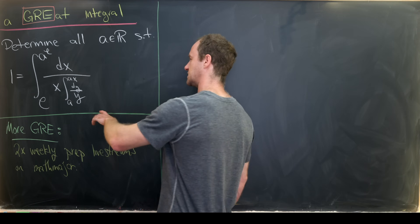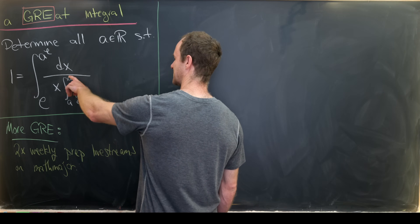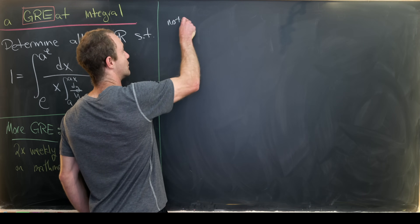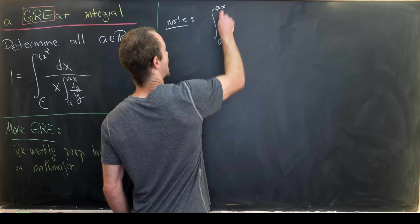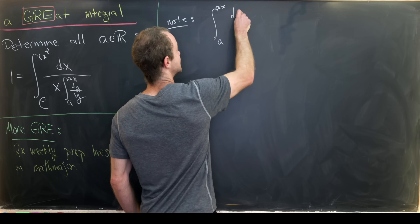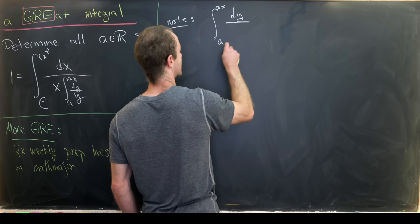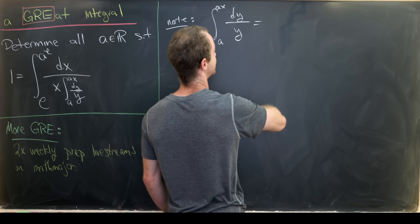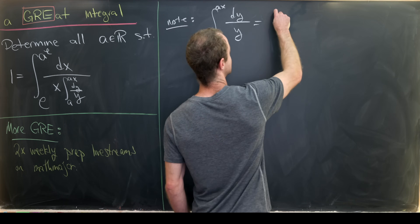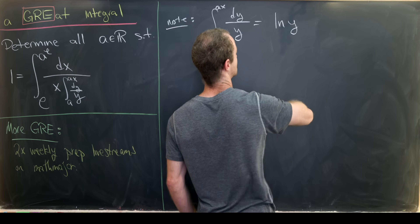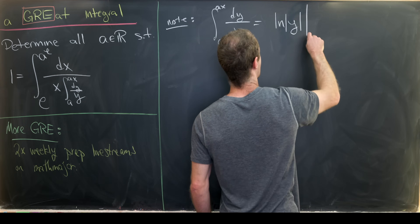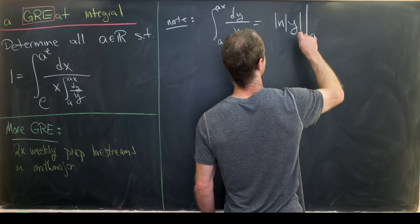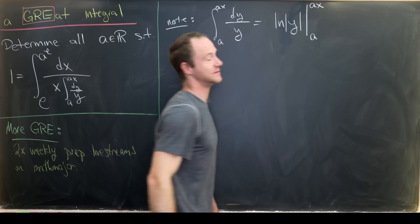The first thing I'd like to do is take this inner integral and calculate that. If we take the integral from a to a times x of dy over y, using the fundamental theorem of calculus we take the antiderivative — that'll be the natural log of the absolute value of y — and evaluate it from a to a times x.